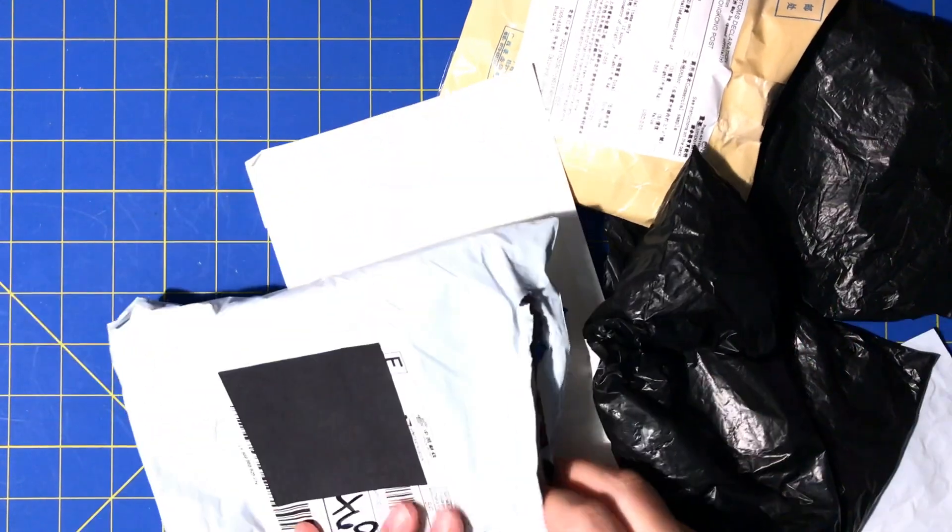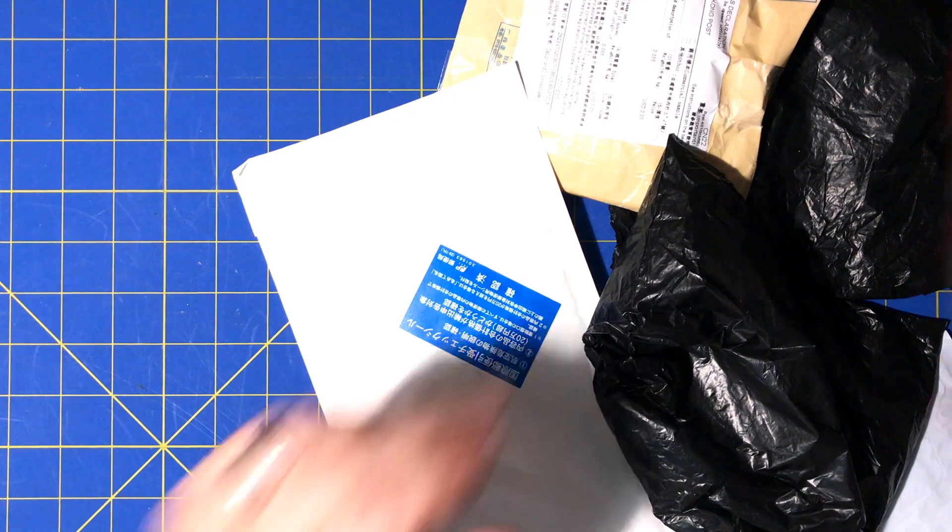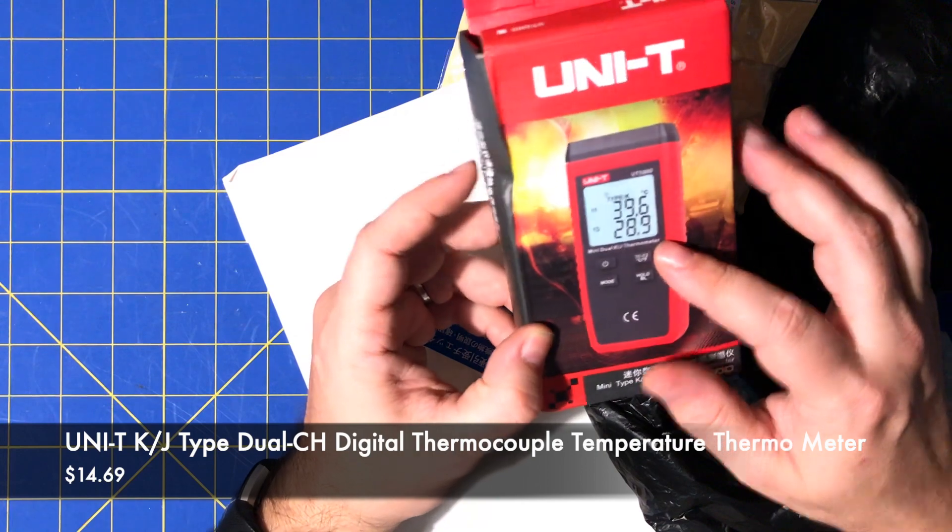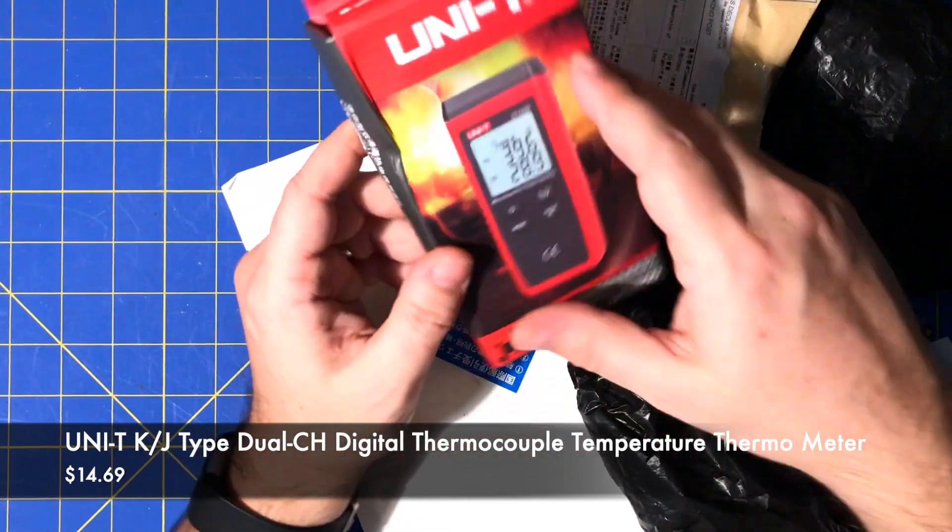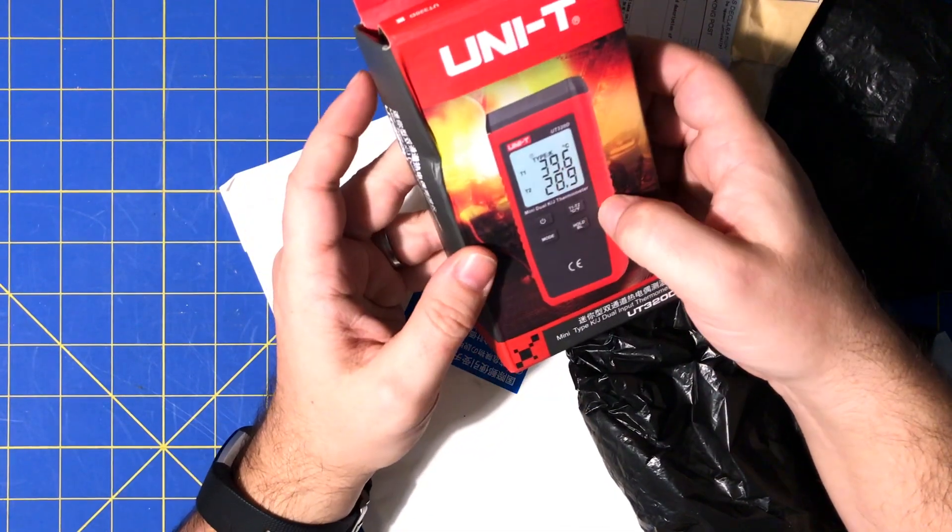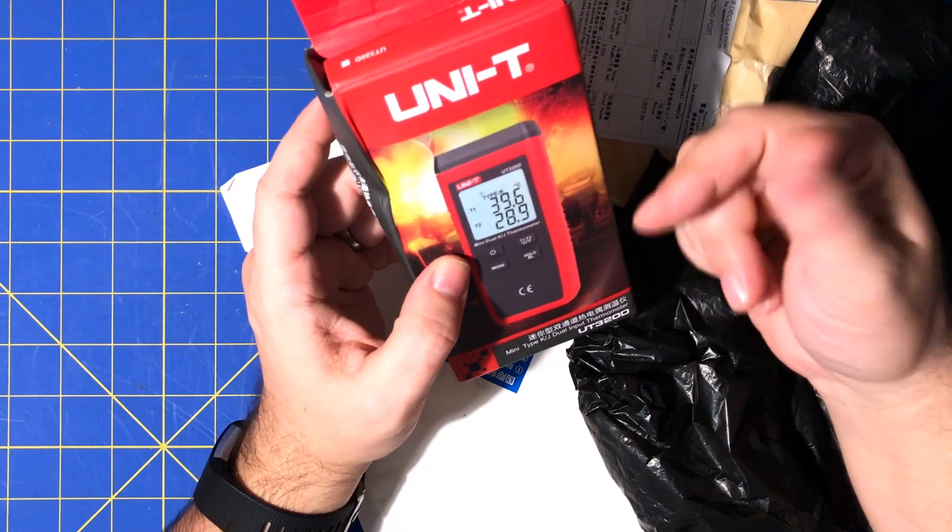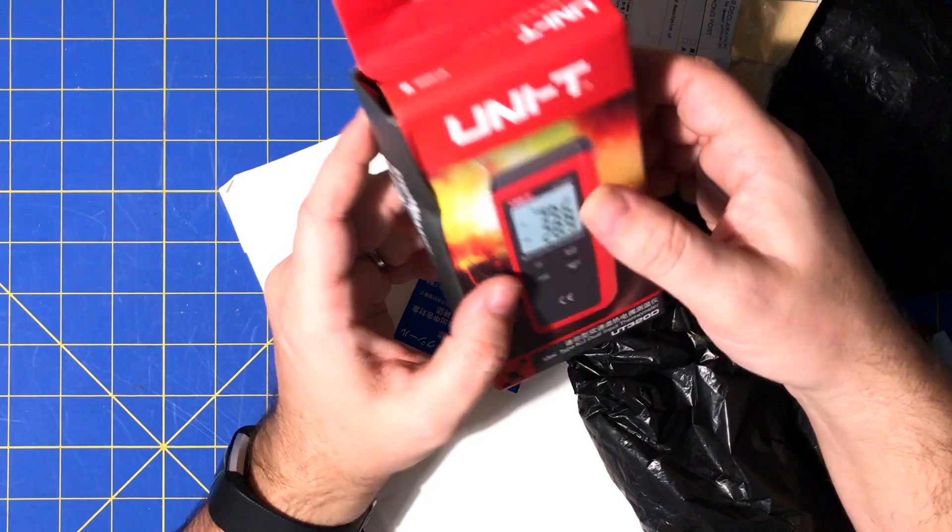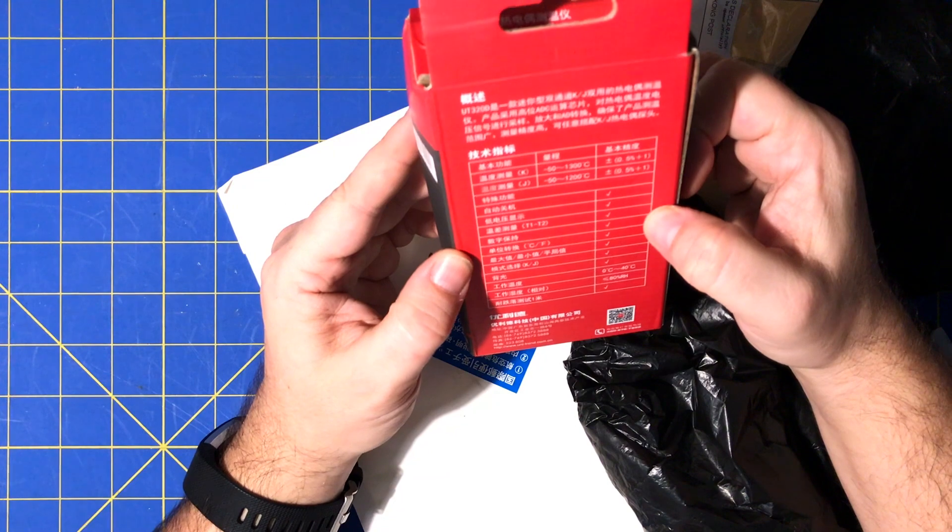Mailbag time. Got some mail here. This one I already opened - this was a Unity, I think it's a 320d. It's a dual thermometer, k-type and j-type, little handheld thermometer. It comes with thermocouples and can do type k, type j. It can do differential measurements and it has an internal NTC to compensate.